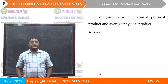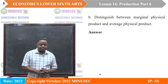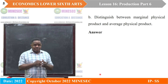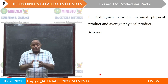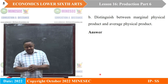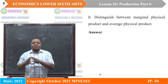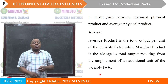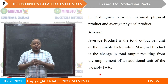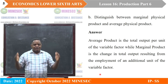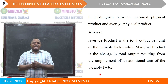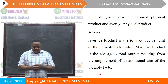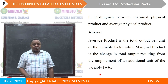Distinguish between marginal physical product and average physical product. Talking about marginal physical product, it is that addition to total product when one more unit of input is introduced in the production process — that is the change that occurs on total product when one more unit of a worker is added. While the average physical product has to do with that total output produced by one person in the production process — that is output per worker — also known as average product.